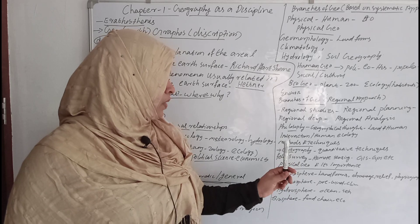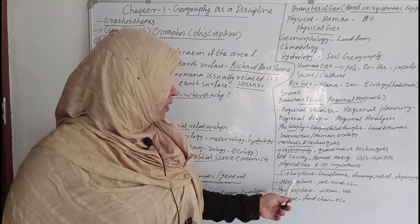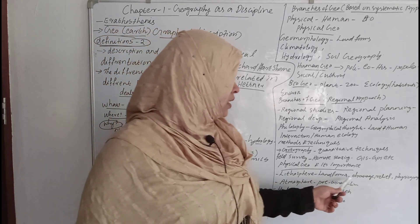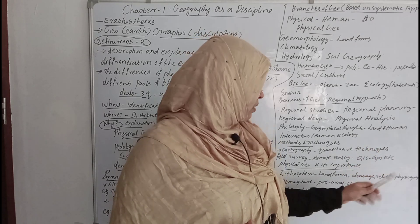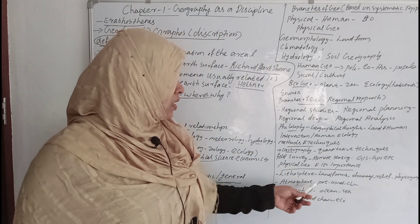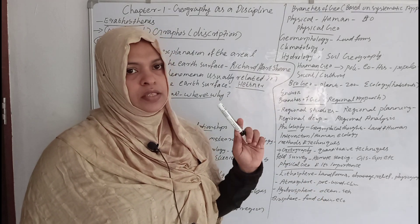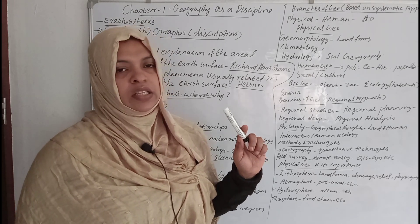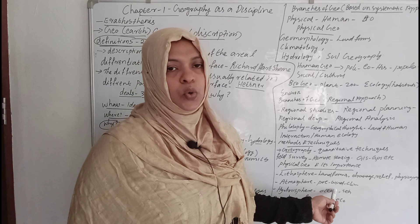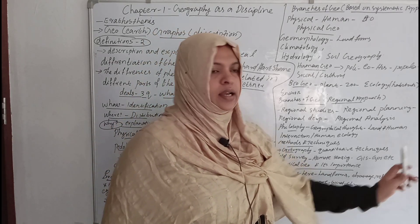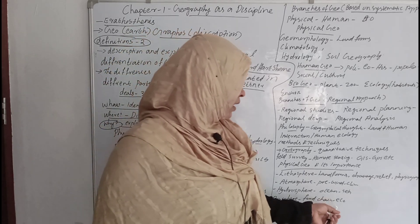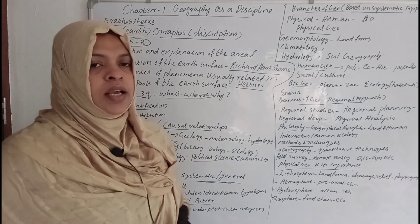Physical Geography and its Importance. It involves four spheres: Lithosphere, Atmosphere, Hydrosphere, and Biosphere. Lithosphere includes Landforms, Drainage, Relief, and Physiography. Atmosphere includes Pressure, Wind, and Climate. Hydrosphere includes Oceans and Seas. Biosphere includes Food Chain, Ecological System, and Biosphere interactions.